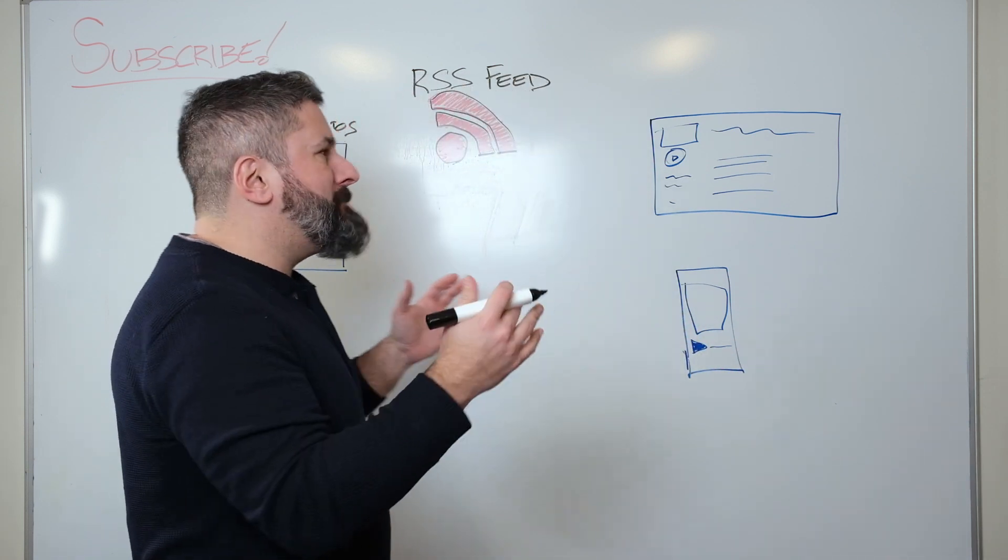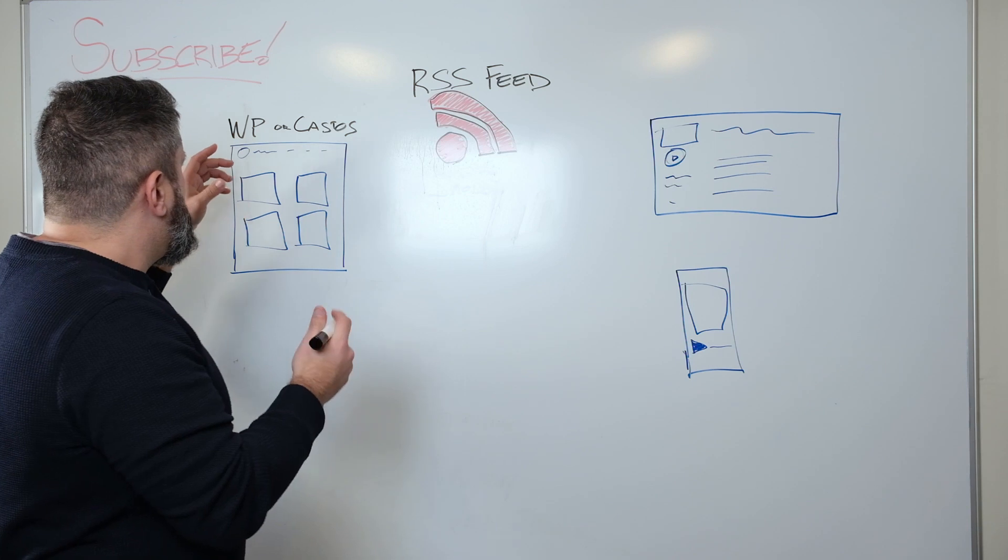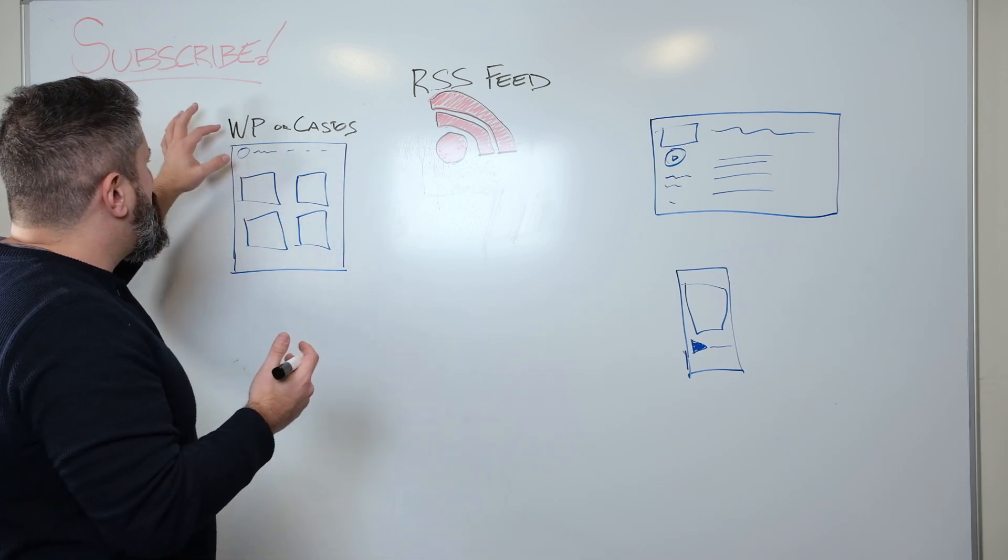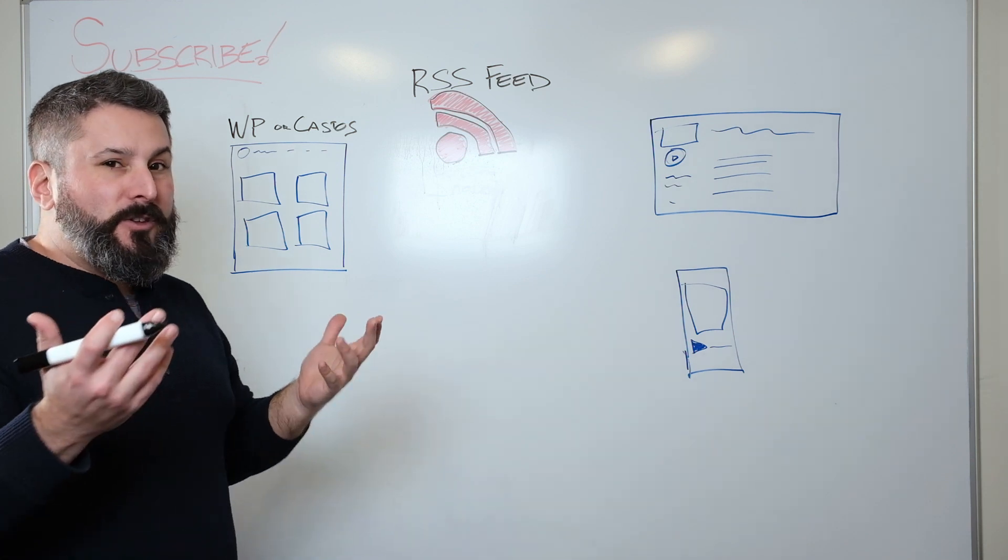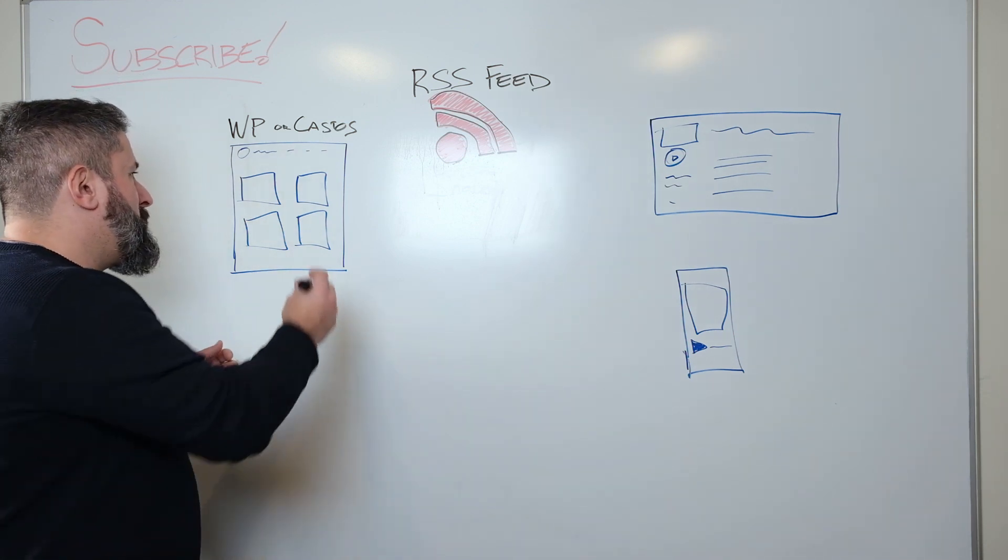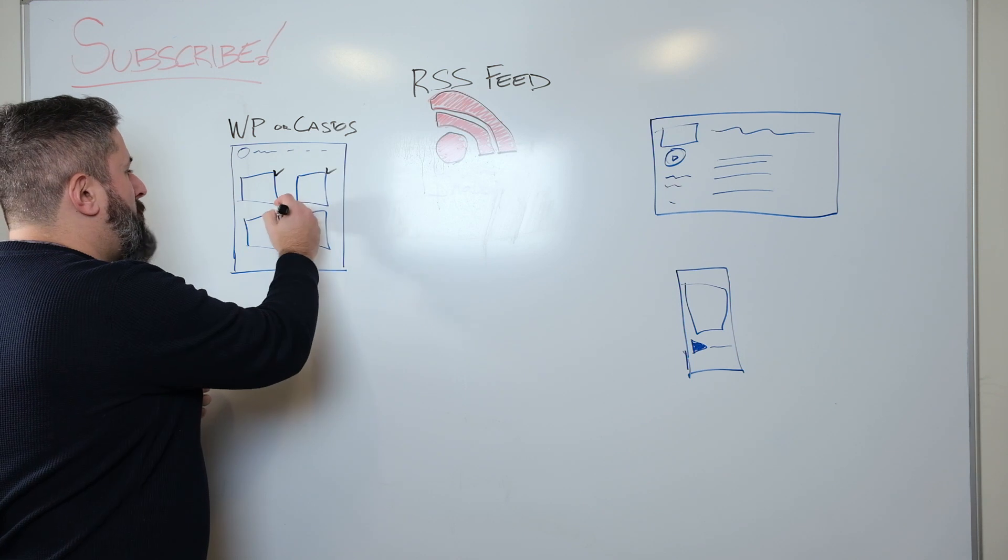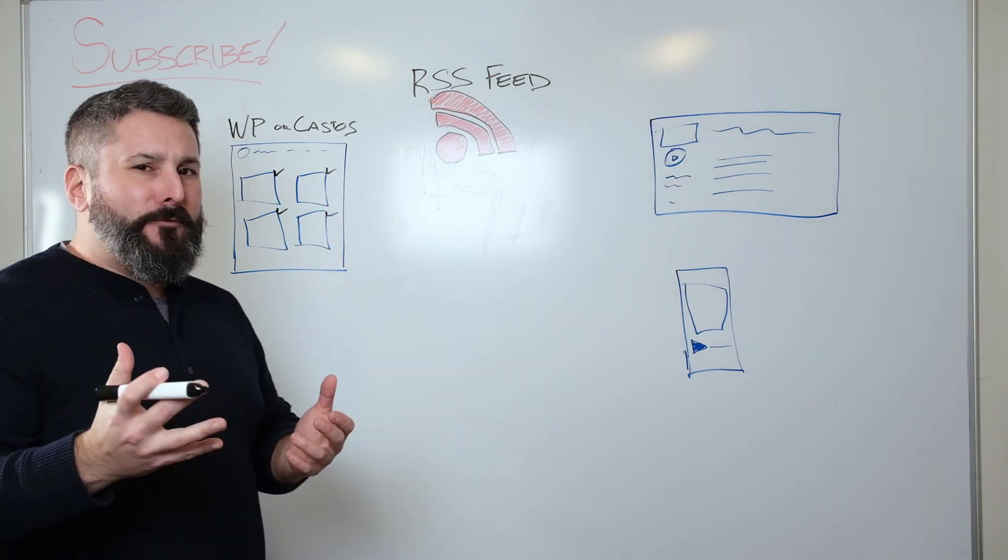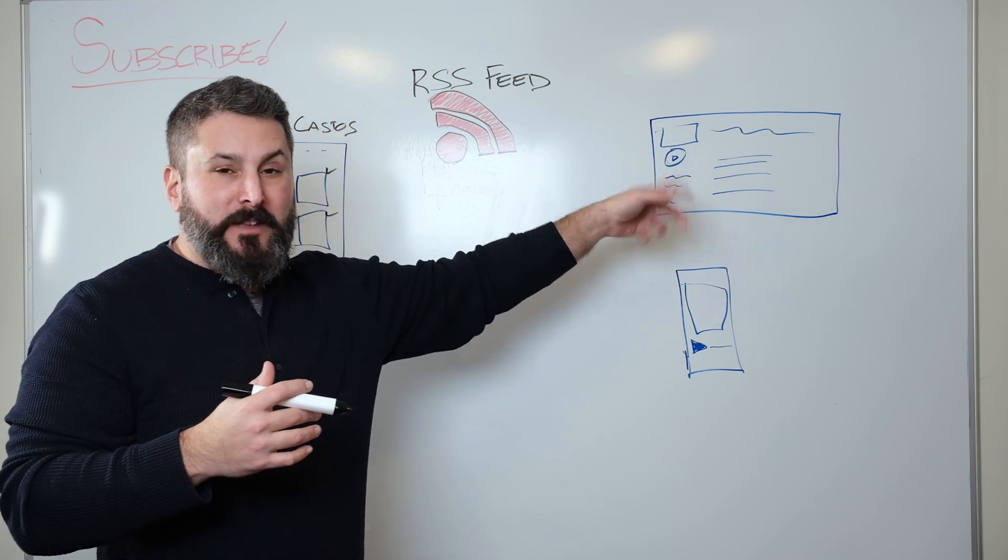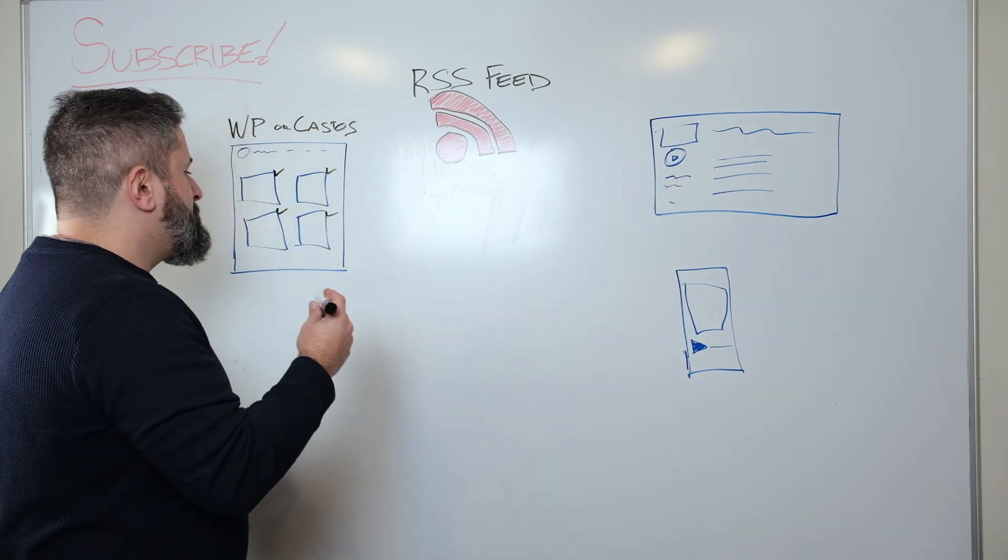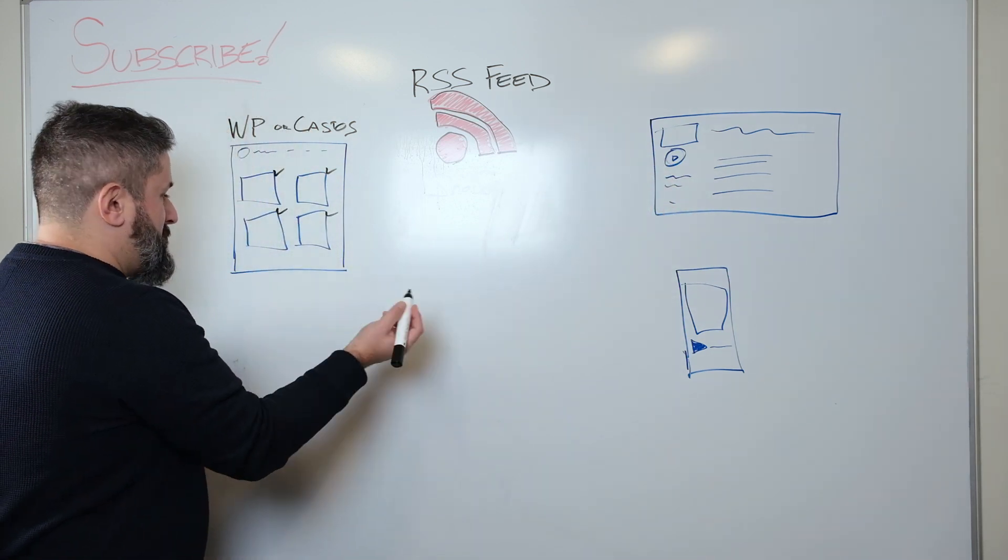And it can live in many places, but most commonly, they're going to live at your WordPress website or your Castos hosting account here at castos.com. And each episode inside your website contains some information that's very important to these distribution points like Apple and Spotify out on the web. So, for example, you have things like the show title.